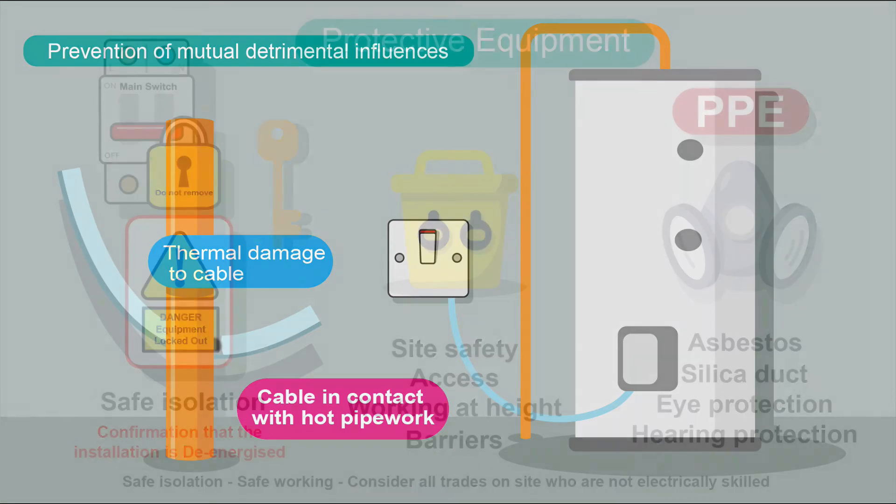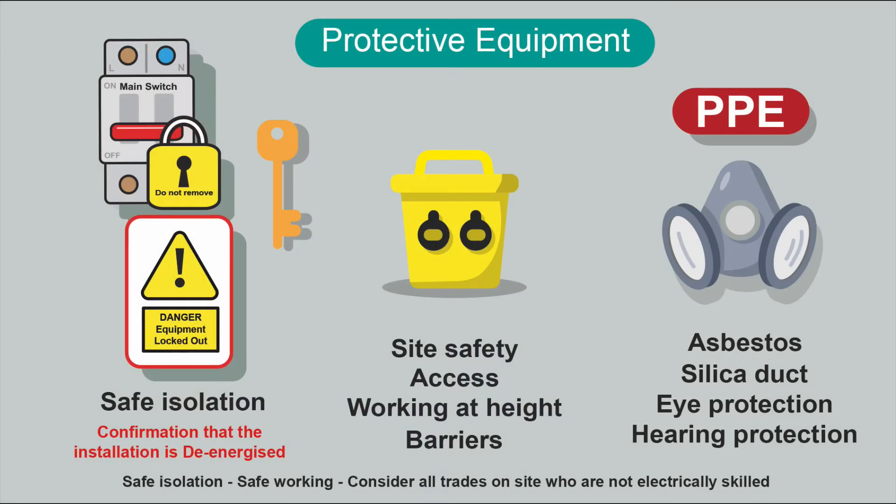We've got to follow safe working practices on site: safe isolation at all times, and we need to consider other people working on site — many won't be electrically skilled. We need to think about the tools we use, access equipment, and working at height, since falls from height are a major problem in construction. We also need to consider barriers and enclosures, personal protective equipment — masks, eye protection, hearing protection — and protection from asbestos and silica dust.